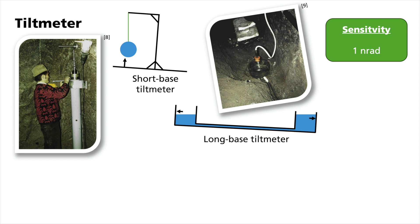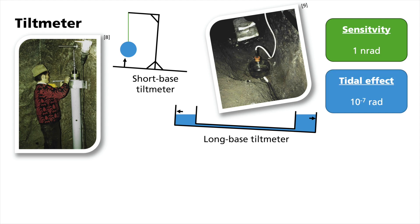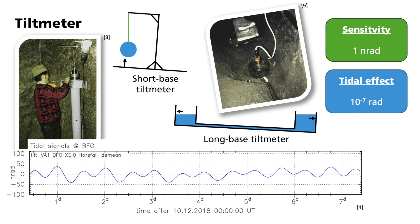Maximum tilt at mid-latitudes is around 10 to the power of minus 7 radians, approximately the two-hundred-thousandths part of a degree. The measurement of a long base tiltmeter at BFO is shown here. Again, diurnal and semi-diurnal variations are visible.